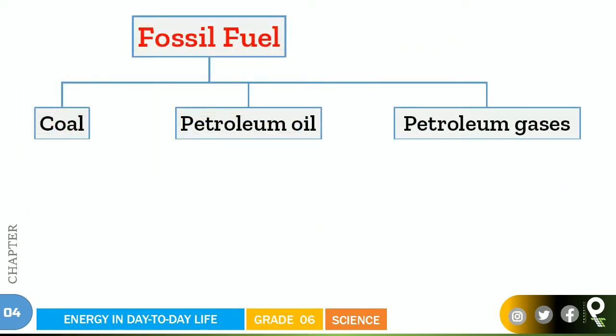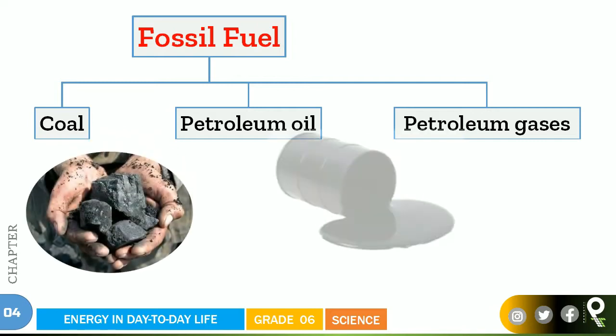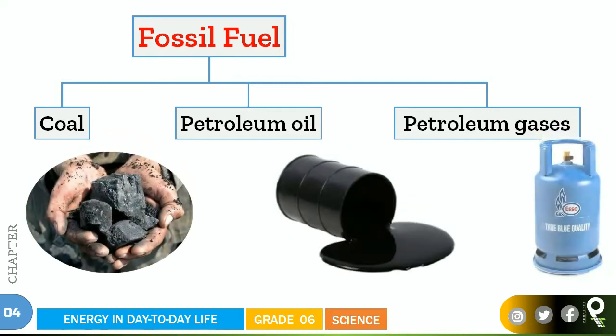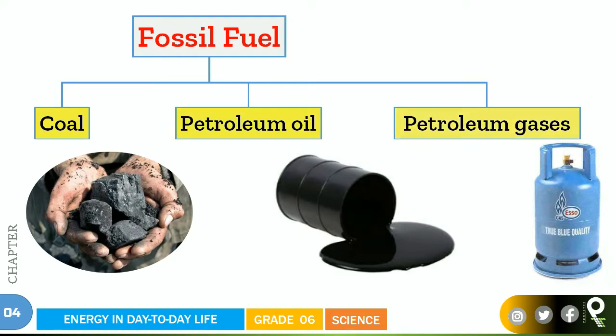We must understand what is fossil fuel. There are three types of fossil fuel in the earth. What are the types of fossil fuel? Coal, petroleum oil, and petroleum gases. Coal, petroleum oil, and petroleum gases are the fossil fuels.